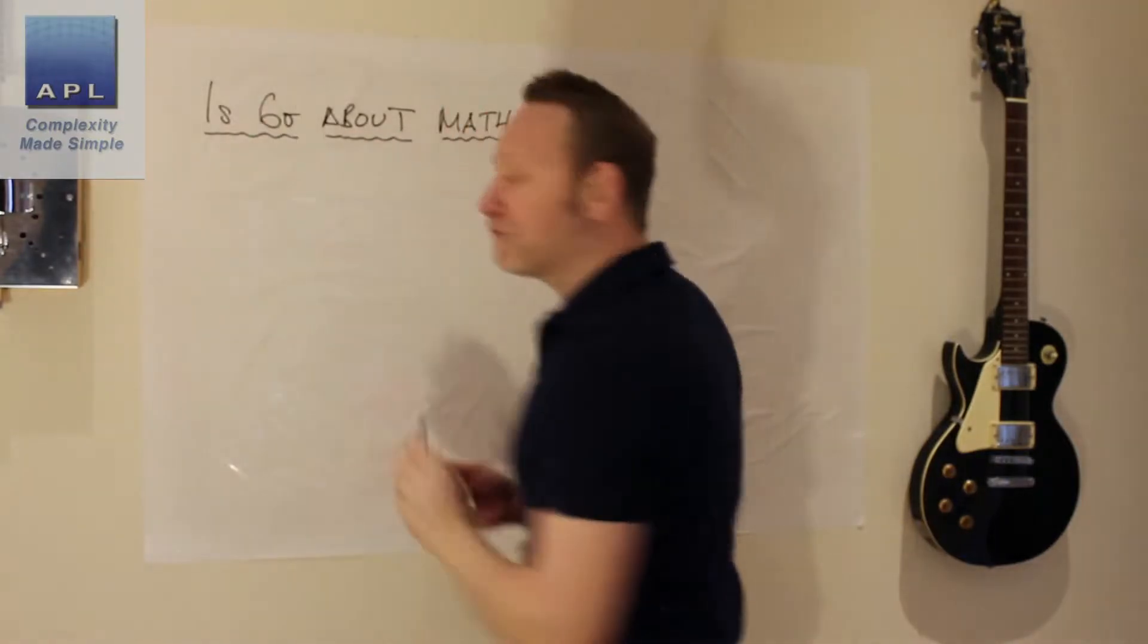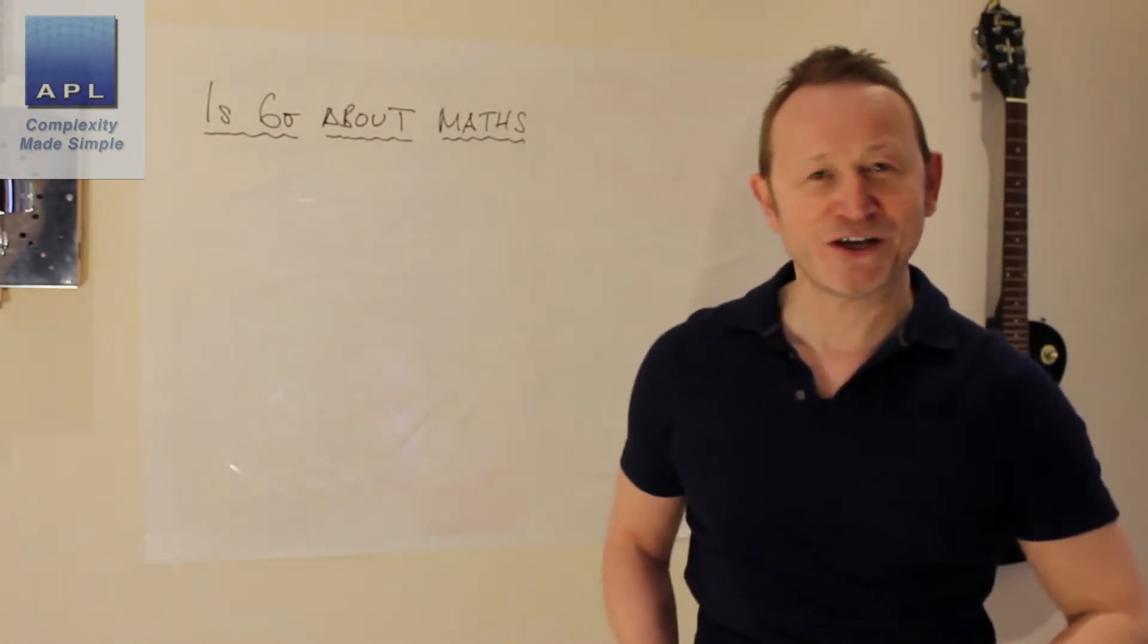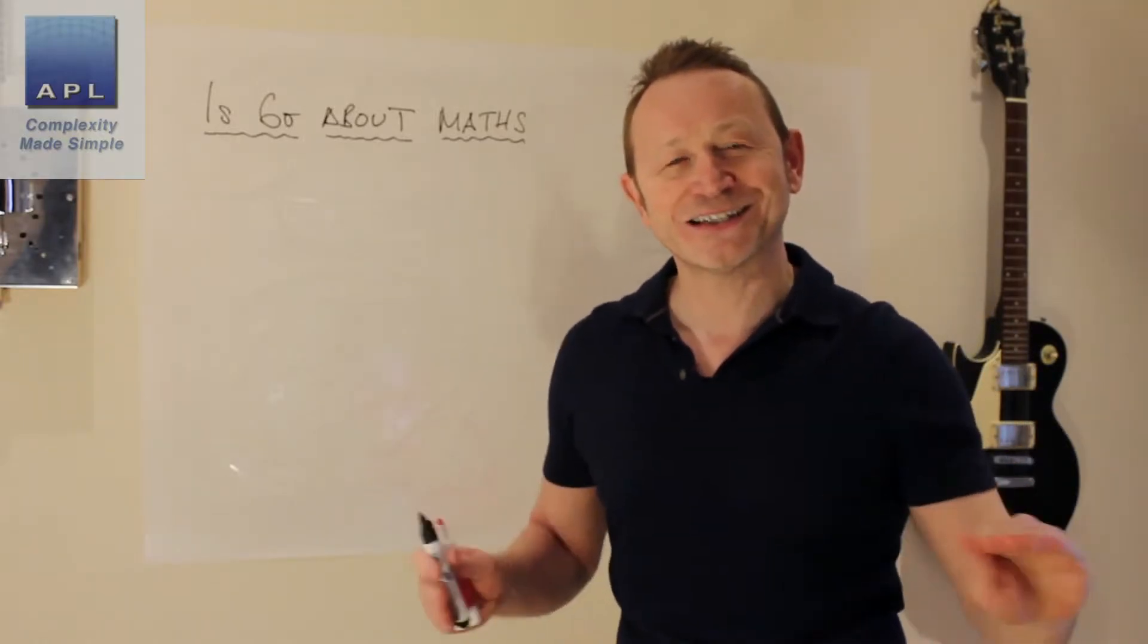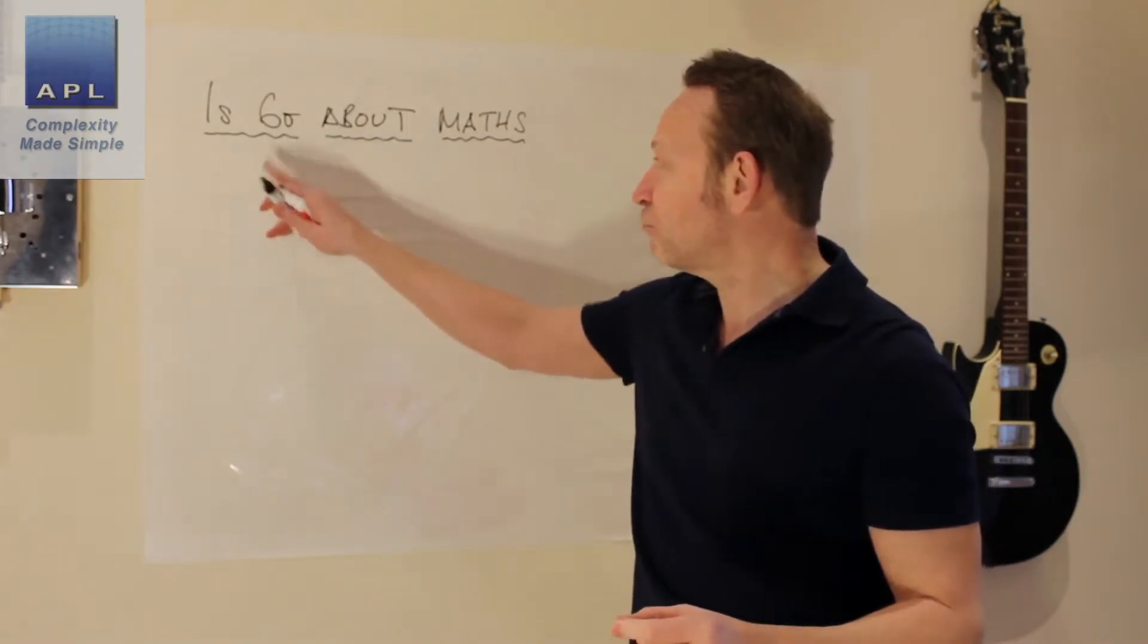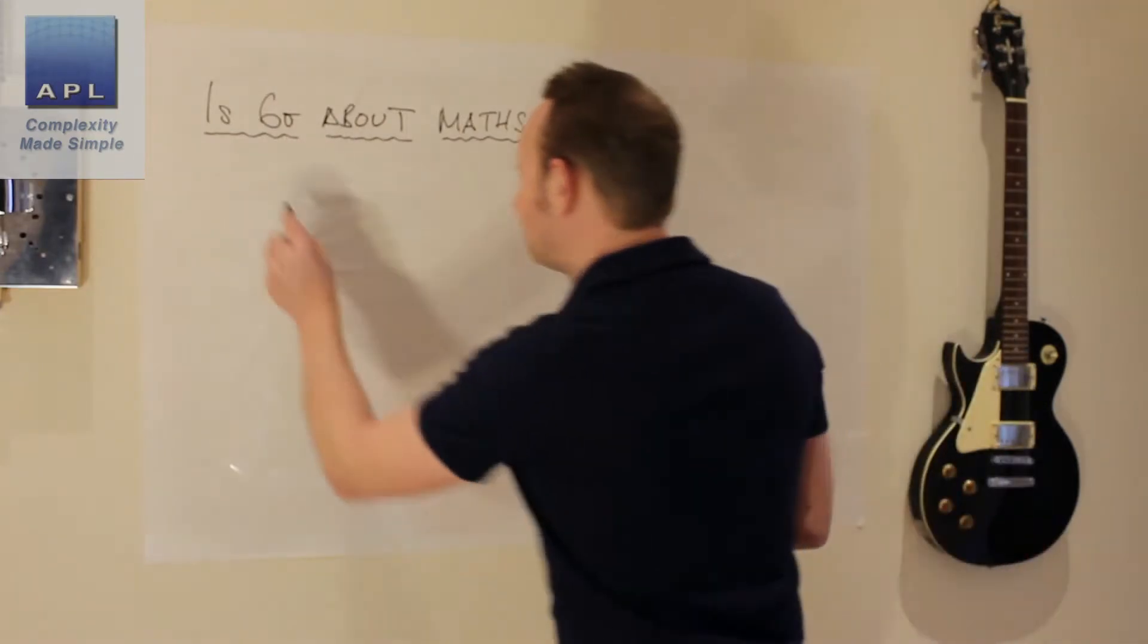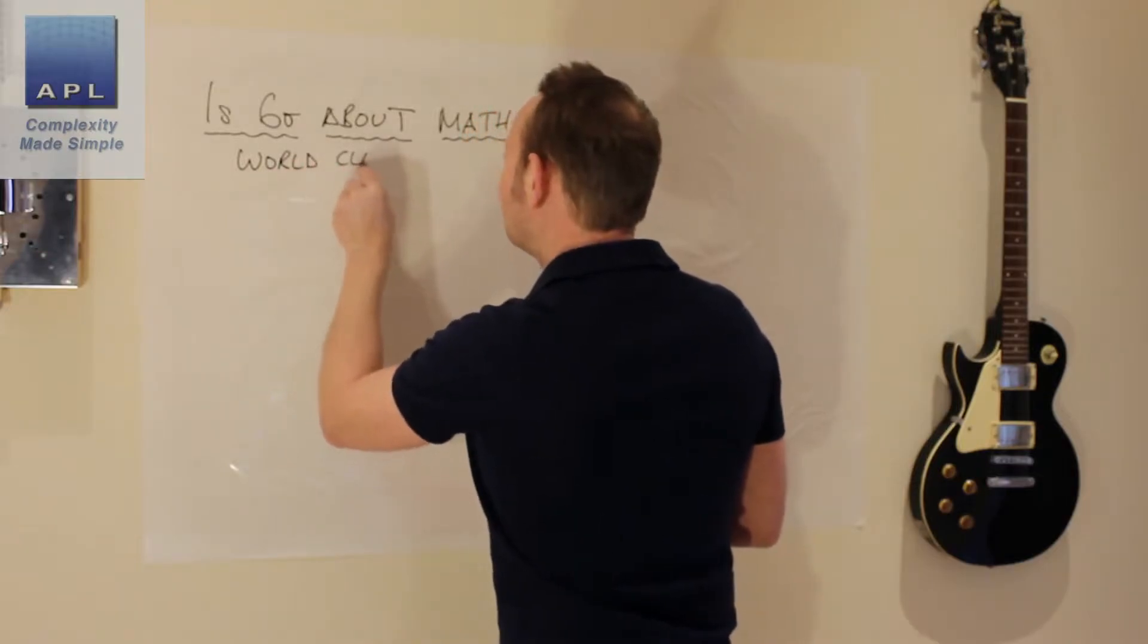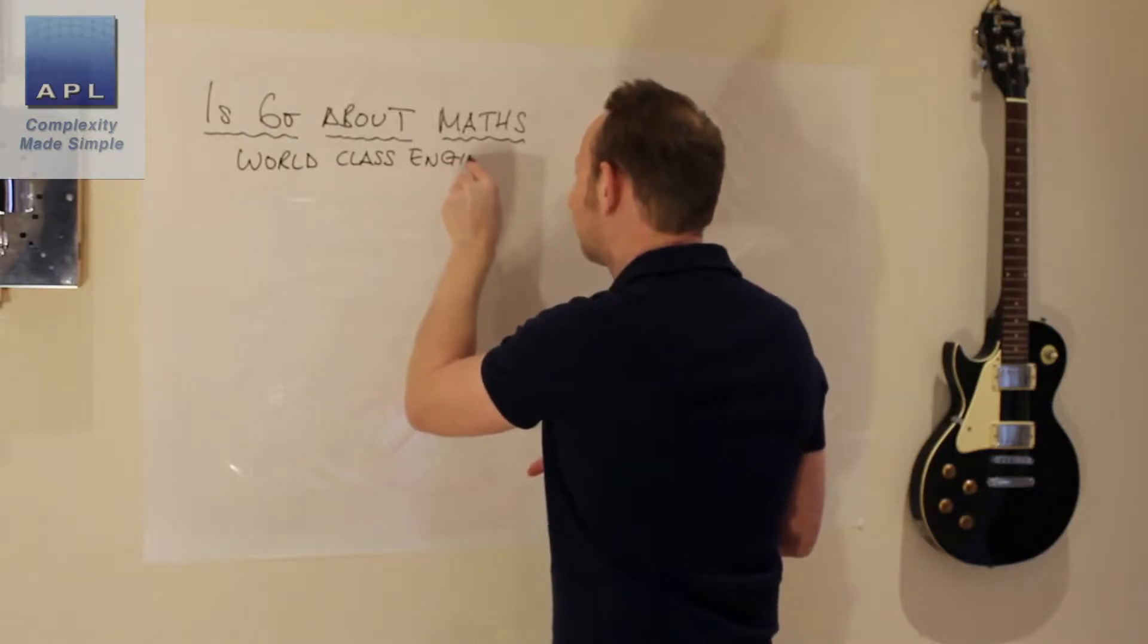Now obviously the phrase Six Sigma - Sigma in itself is about standard deviation, so it kind of suggests it's all about mathematics. But Six Sigma is not about mathematics. I wish we could change this name. Let's call it World Class Engineering.